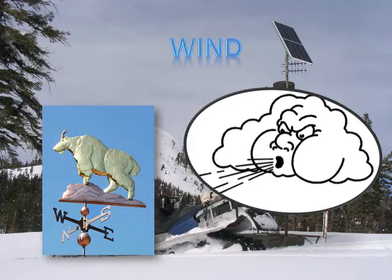The wind must blow in a direction that allows the particles to reach the targeted area, and the direction needed for proper seeding varies by region. Wind speeds at 10,000 feet must not surpass 60 knots in order to ensure the growth of ice crystals.